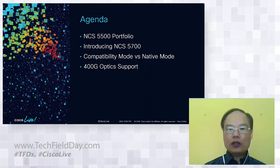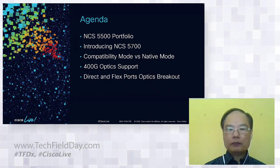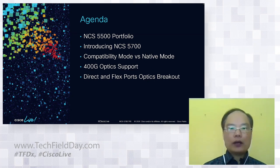The agenda for today: NCS 5700 is part of the current NCS 5500 series. I will first do a brief recap on the NCS 5500 portfolio and then introduce two new NCS 57 line cards. For investment protection and easy migration, we support both NCS 57 line cards and older line cards running in the same chassis with compatibility mode. After migration is completed, we could run in native mode with more enhancements. NCS 5700 introduces 400 optic support, and we will also introduce the concept of direct ports and flex ports on these line cards, and the flexible combinations of optics and breakout support.